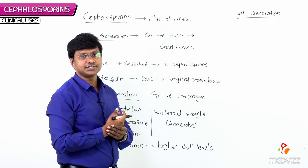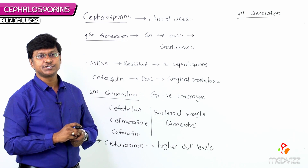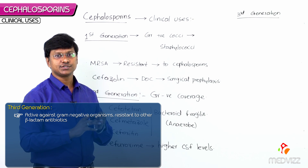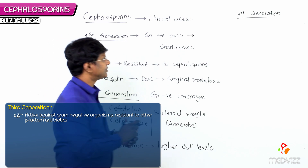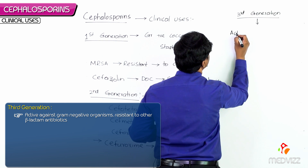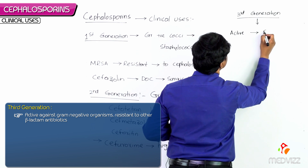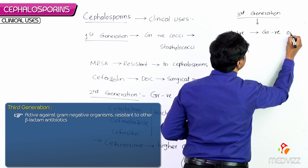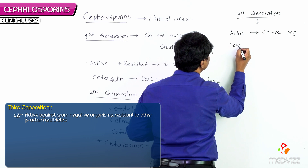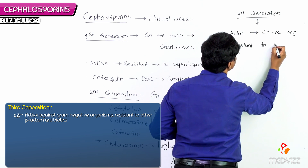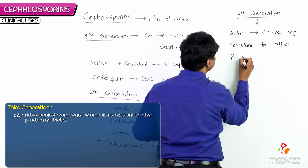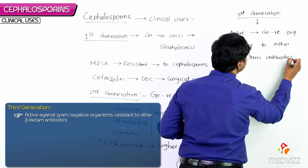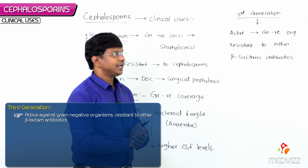Now, the clinical uses of the third generation cephalosporins: these are active against gram-negative organisms that are resistant to other beta-lactam antibiotics.